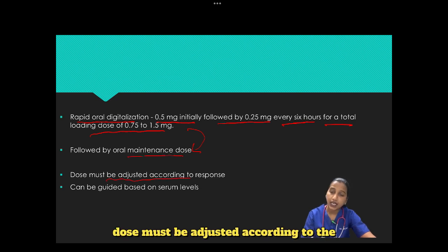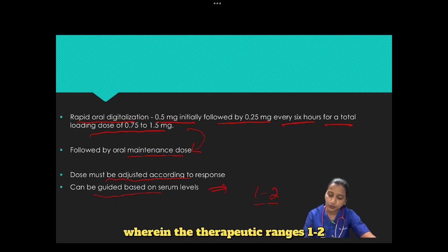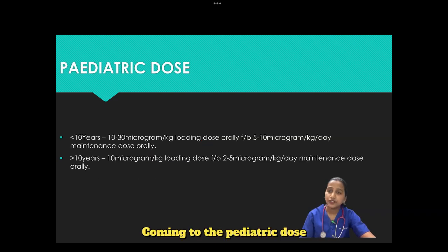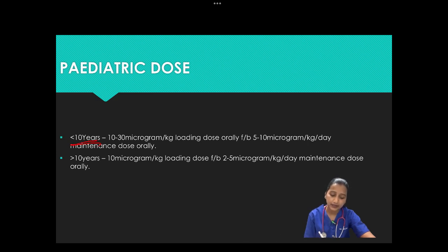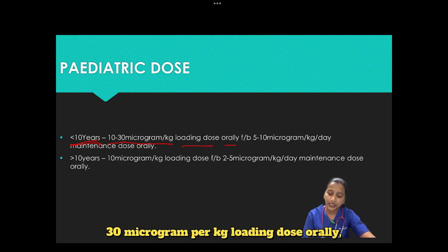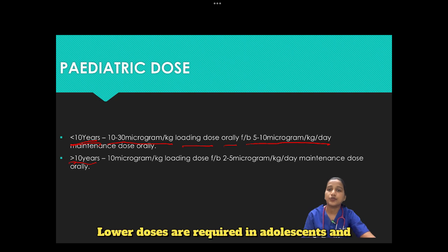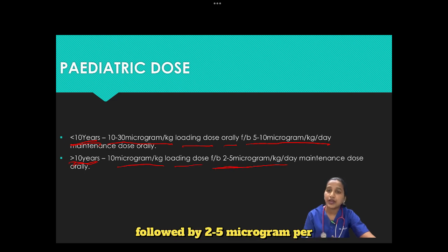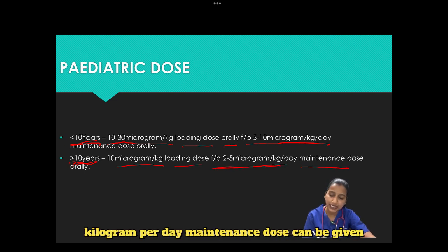Dose must be adjusted according to response. It can be guided based on serum levels, wherein the therapeutic range is 1 to 2 nanograms per ml. Electrolytes, mainly potassium, must be checked and normalized before digoxin administration. For pediatric dosing: children less than 10 years require 10 to 30 micrograms per kg loading dose orally, followed by 5 to 10 micrograms per kg per day maintenance dose. For adolescents and those more than 10 years, 10 micrograms per kg loading dose followed by 2 to 5 micrograms per kg per day maintenance dose.